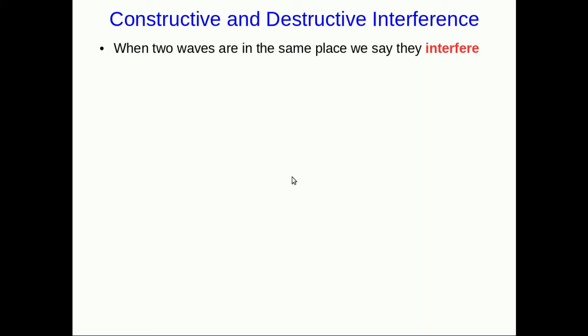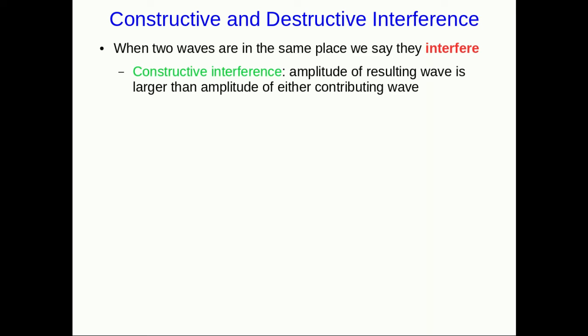There is some more terminology that's useful here. Whenever two waves are in the same place so that they're adding together, we say that they are interfering, and there are some specific types of interference. When the amplitude of the resulting wave is larger than the amplitude of either of the waves that are overlapping, we call that constructive interference.